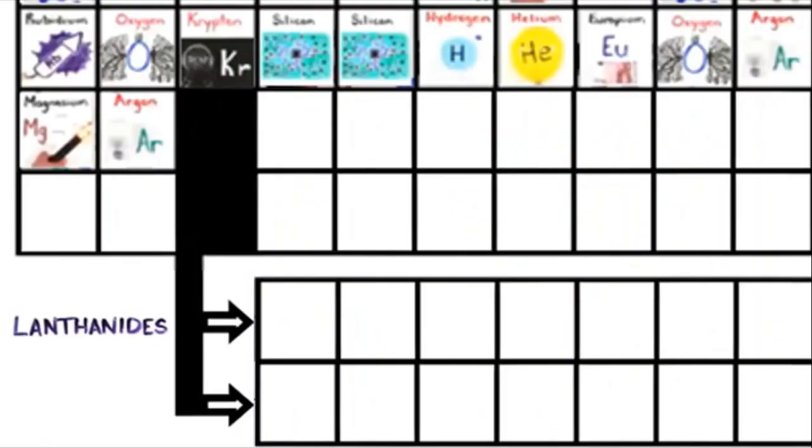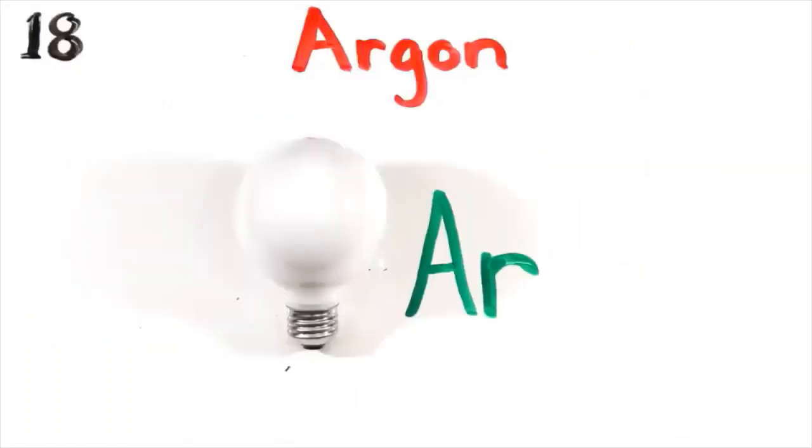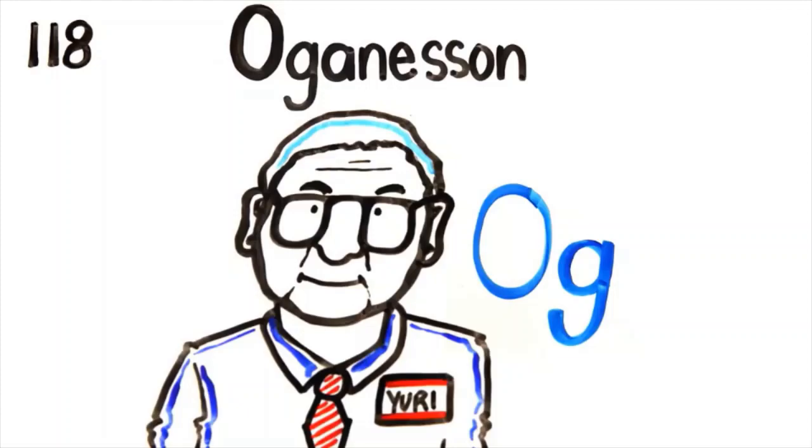Argon is 56, and this is where the table splits, where lanthanides have just begun. Argon, Helium, then Oganesson.